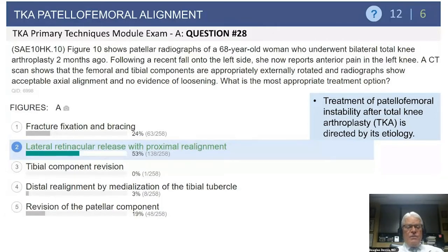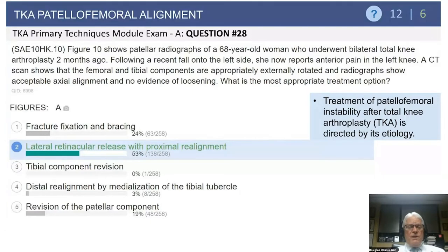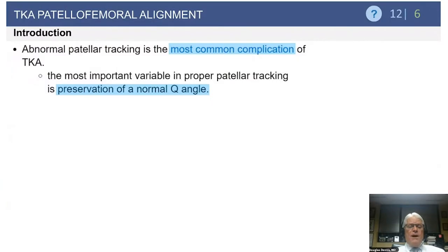A distal realignment is not recommended. There are certainly more complications associated with doing a tibial tubercle osteotomy and transfer. There's no reason to revise the patellar component because it is still well fixed. Sometimes in situations like these, if patients have a fall early on after knee arthroplasty, when you open the knee, they may have a dehiscence of the arthrotomy and simply a little lateral release with repair of an arthrotomy dehiscence will solve the problem.